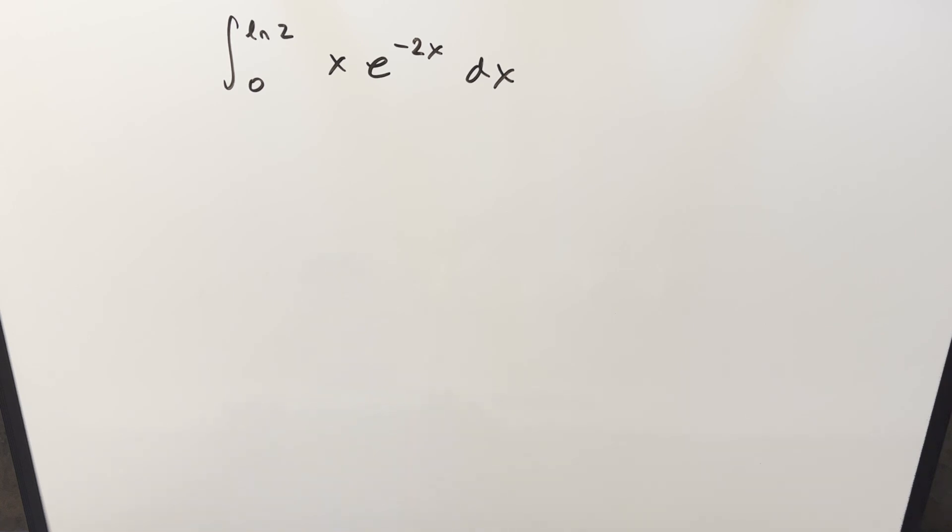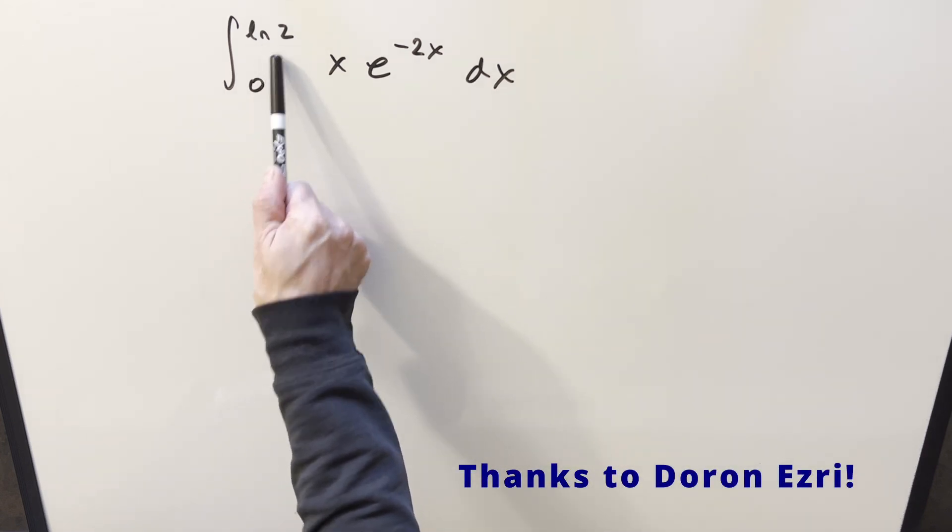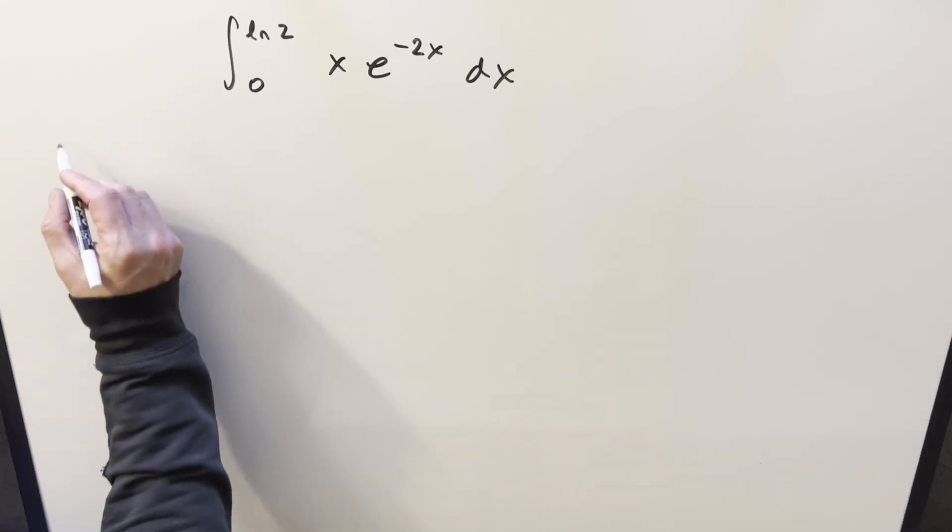Okay, we have here today an interesting integral. We've got the integral from 0 to ln2 of x times e to the minus 2x dx. Now this is really similar to something that came out of a video I did recently. So this was kind of in the middle of the video. We had something very similar to this. And in that other video, I think I did it with integration by parts, if I'm remembering. And the suggestion in the comments we had from Duran Esri was to do this using a Laplace transform, even though we don't have our bound going to infinity. So I don't know if this is exactly what he had in mind, but this is how I did it.